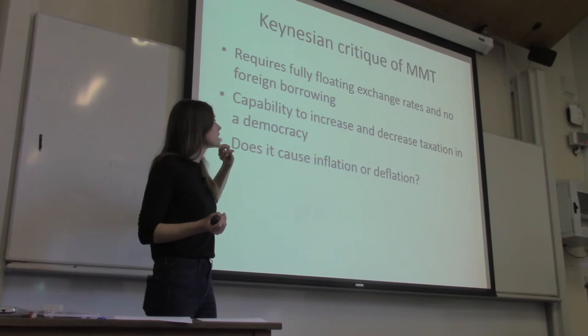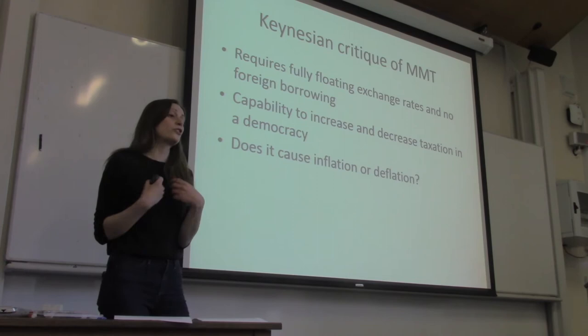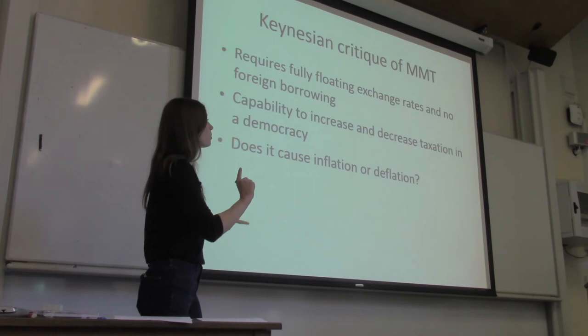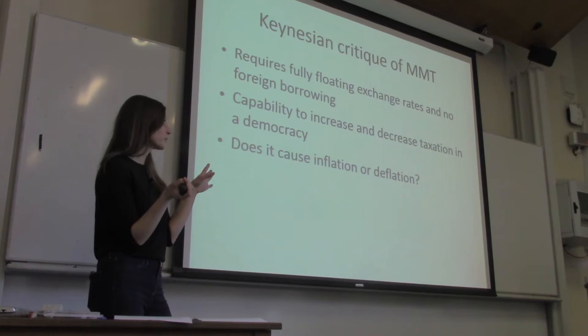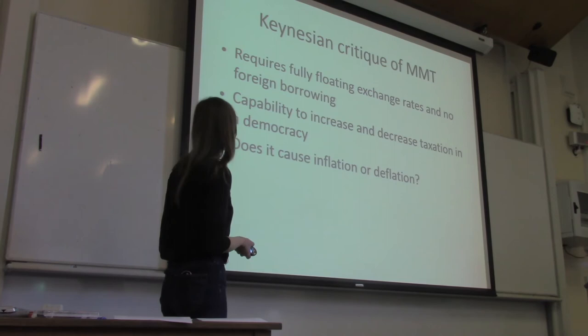Another constraint is that you can't have much foreign borrowing, because you'd have to repay in another currency — one you don't issue — so you'd have to generate it from tax income. You need a fully floating exchange rate to adopt this proposal. That really only applies to perhaps the US, and under certain circumstances China. So the question arises: how useful is MMT for the average country?